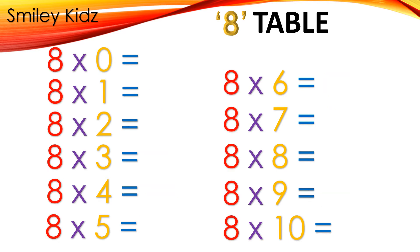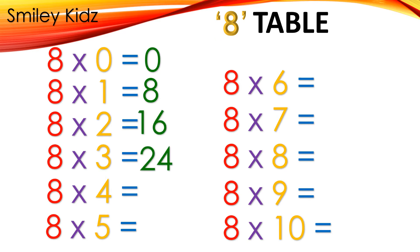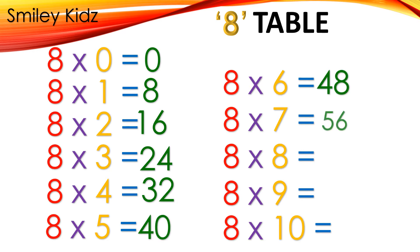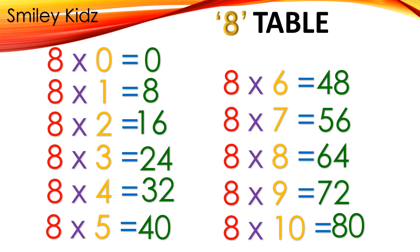Table 8: 8×0=0, 8×1=8, 8×2=16, 8×3=24, 8×4=32, 8×5=40, 8×6=48, 8×7=56, 8×8=64, 8×9=72, 8×10=80.